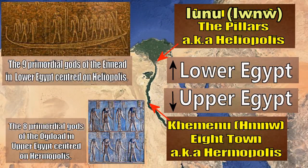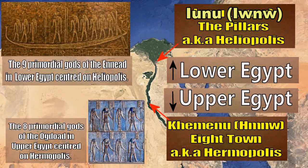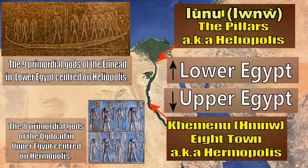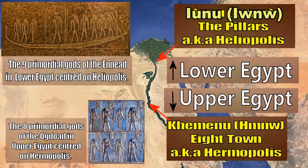Egypt is defined by several periods. In upper or southern Egypt, Khemenu, Eight Town or Hermopolis, the primordial gods are defined by the Ogdoad — the eight important gods — with their center of worship being Khemenu, or Eight Town as in the eight gods. This was later renamed Hermopolis, as in Hermes Trismegistus, or Hermes, or Thoth. While in lower or northern Egypt, Iunu — the pillars, aka Heliopolis — was the center of worship of the nine primordial gods of the Ennead.